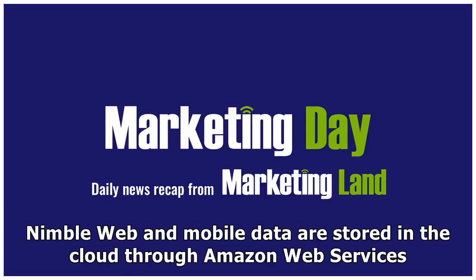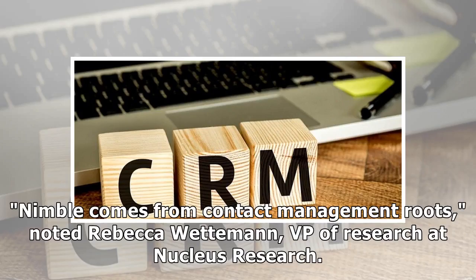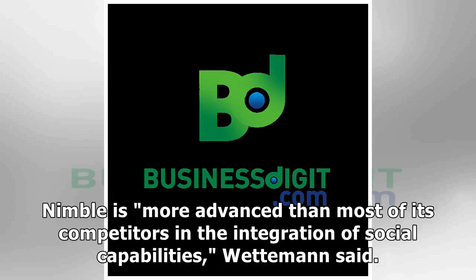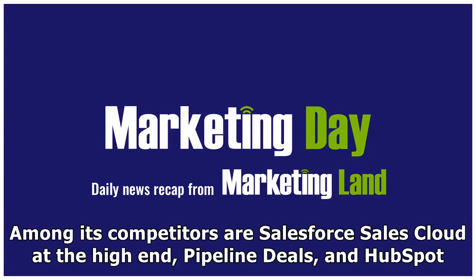Nimble web and mobile data are stored in the cloud through Amazon Web Services. Nimble comes from contact management roots, noted Rebecca Wettman, VP of Research at Nucleus Research. There's a sharper focus on individual salespeople — the golden Rolodex — than other CRM tools that are a scaled-down model of traditional top-down CRM applications, she told CRM Buyer. Nimble is more advanced than most of its competitors in the integration of social capabilities, Wettman said, noting competitors include Salesforce Sales Cloud at the high end, as well as Pipeline Deals and HubSpot.